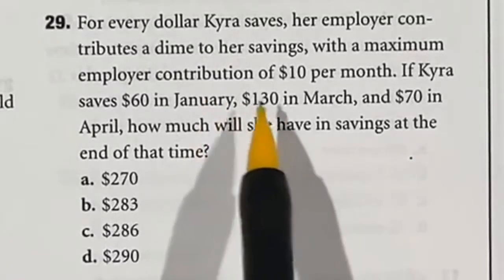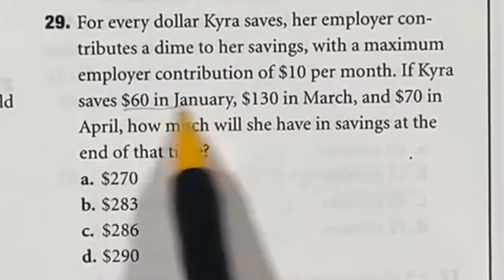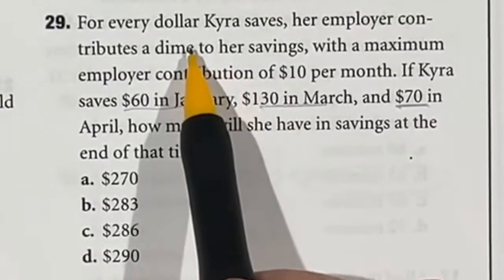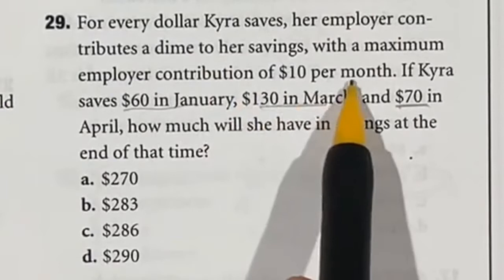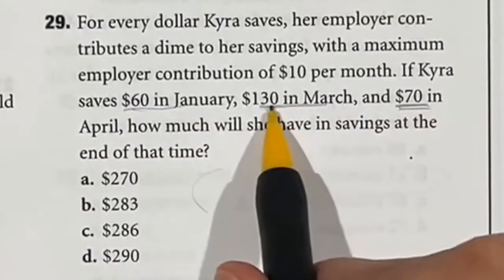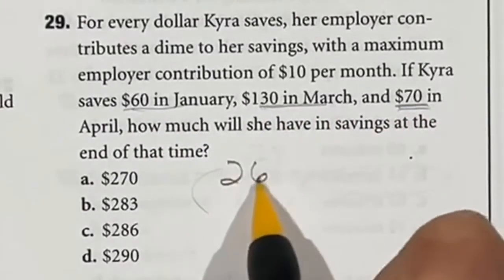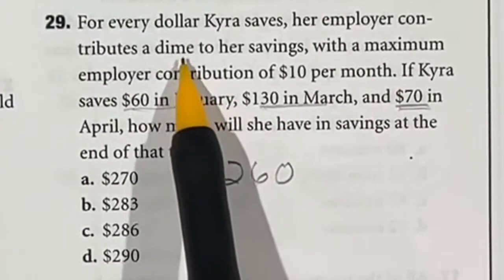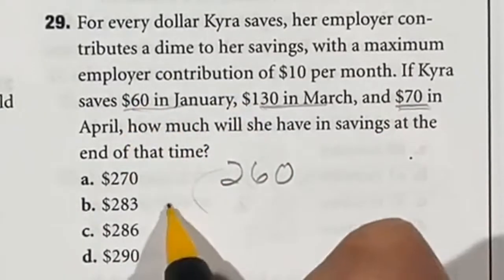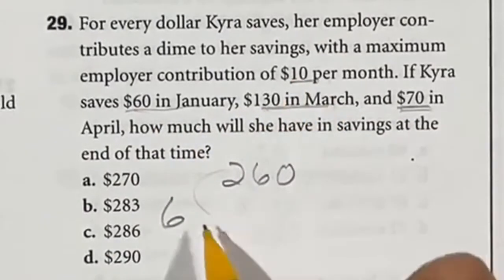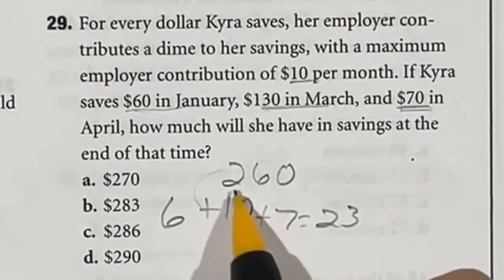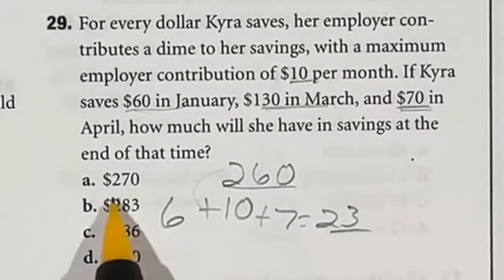For question 29, Kyra makes a certain amount in January, March, and April, and the company gives a dime for every dollar she saves, up to a maximum of $10 per month. First, find total savings on her own: $60,000 plus $130,000 plus $70,000 gives $260,000. For the company match, divide each by 10: $6,000 for January, $13,000 for March but the max is $10,000, and $7,000 for April. Adding those together gives $23,000. Combined final answer is $283,000, answer B.